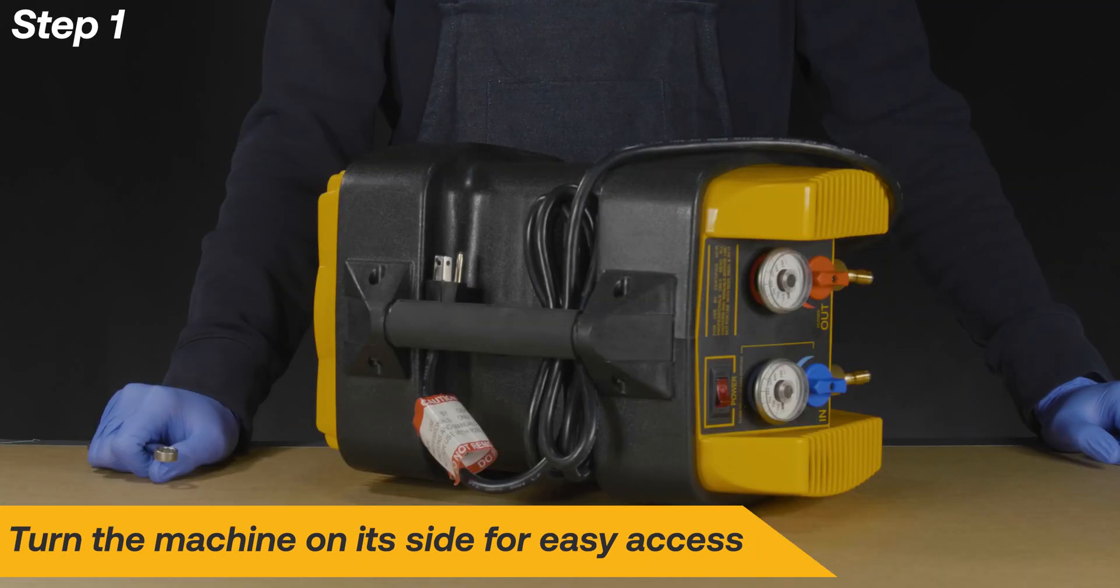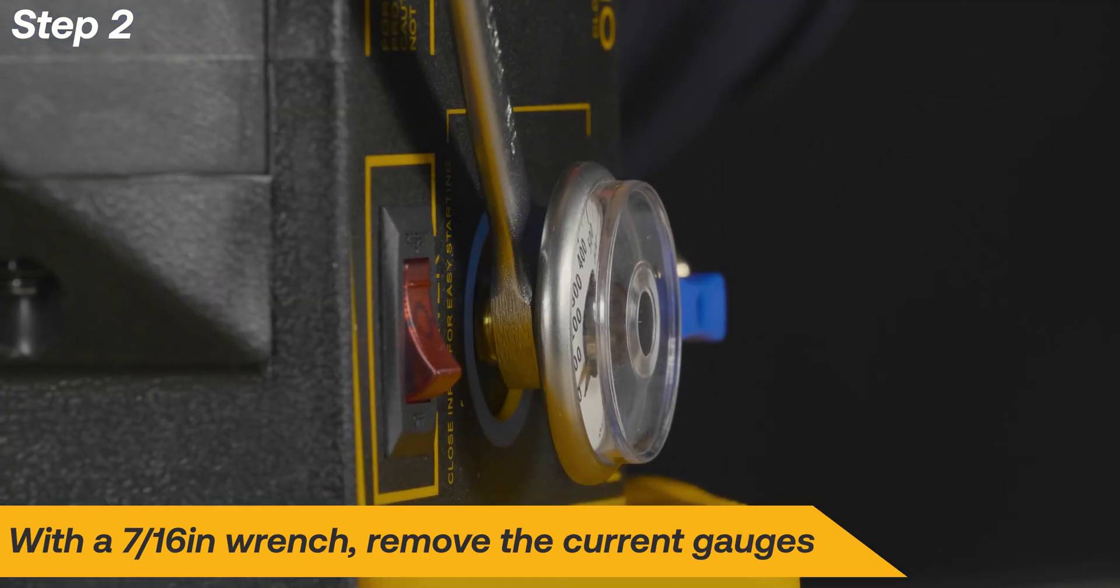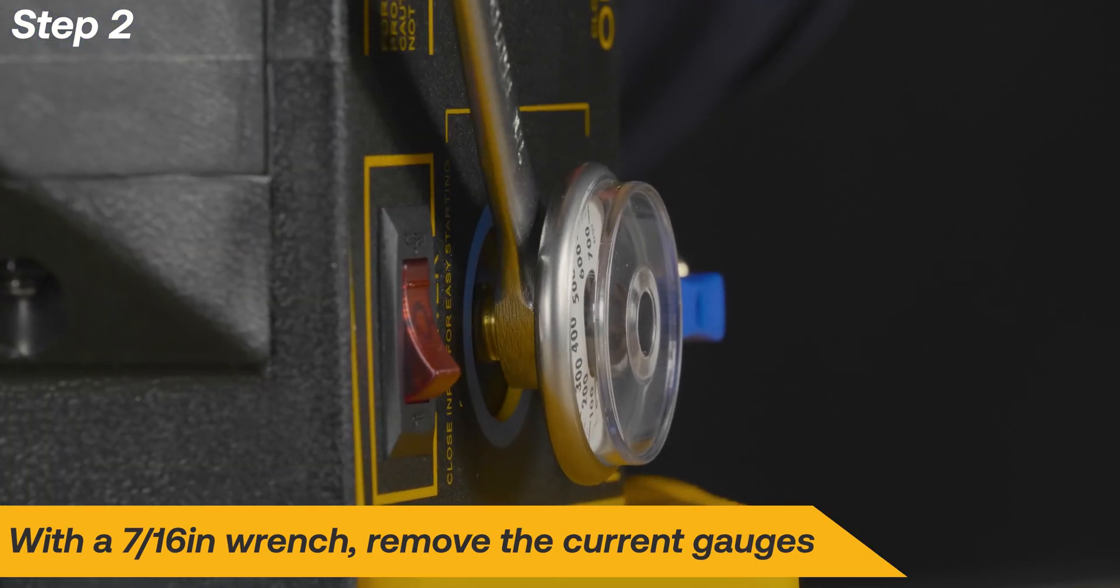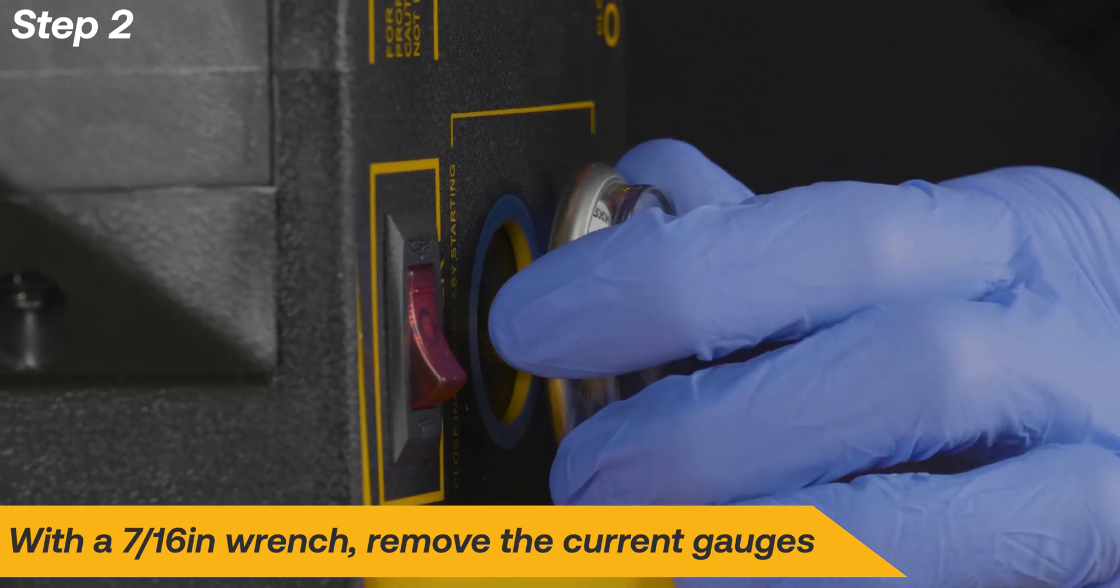Begin the repair by turning the machine on its side for easier access to the gauges. Using a 7-16 inch wrench, loosen and remove the current gauges.